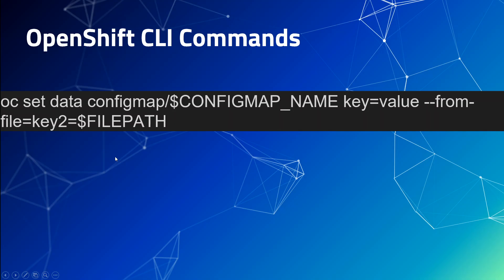If you look at this command, we are doing oc set data, then mentioning the name of the config map, then the name of the key we want to update, and then we are extracting the new value from a file. In that file we have specified the new value in key two. So what oc set data will do is go into that file, extract the value of key two, and then assign that value to the key we are specifying in the config map, which is stored in the $CONFIGMAP_NAME variable. So it makes it very easy.